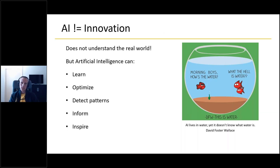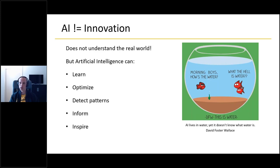In other words, AI is not really innovation - it's been there for a long time. AI doesn't understand the real world; in some sense, it's just stupid. It only does what we tell it to do. It can learn from things, optimize things, detect patterns, and inform you. But if we don't tell AI what water is, it will not understand what water is. We always have to do the sensing ourselves and teach AI how things work.